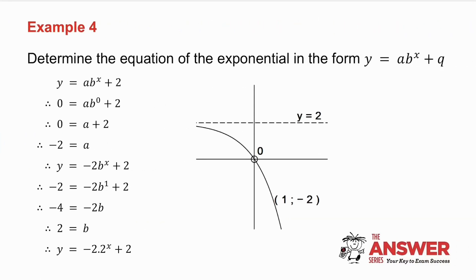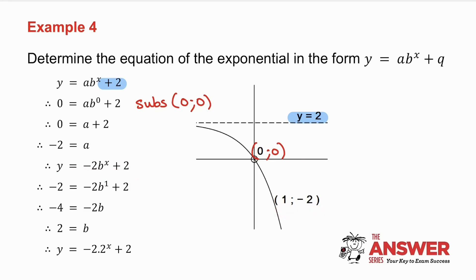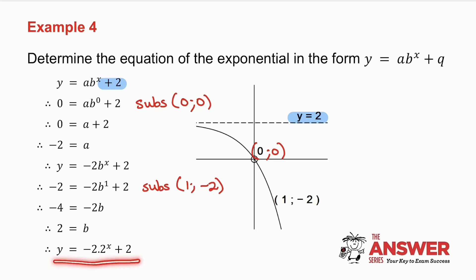For the exponential, there's an asymptote of y equals 2, so we add 2 at the end of the equation. The graph passes through the origin, so we substitute (0, 0) and solve for a. We then use that value of a and recognise the graph also passes through the point (1, minus 2), so we substitute those values and solve for b to get the equation of the exponential.